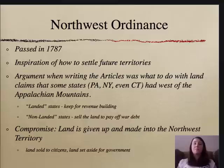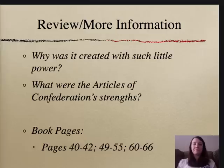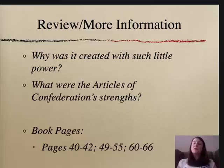It was also made clear at what point these territories could apply for statehood, and that they would apply on an equal footing rather than as a junior state. So you should now be able to answer why the Articles were created with such little power, and what the Articles' strengths were. If you want more information, look at the following pages in your textbook, and don't forget to submit your summary and your questions. Have a great day.